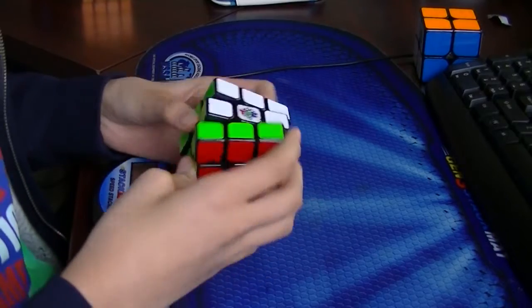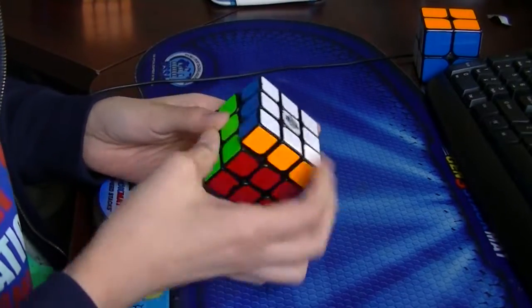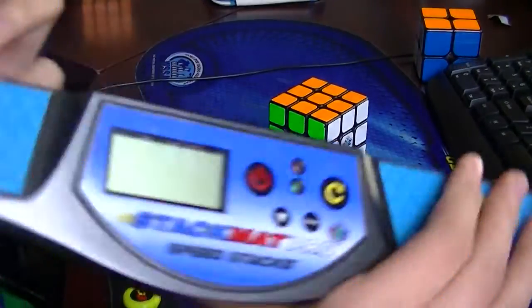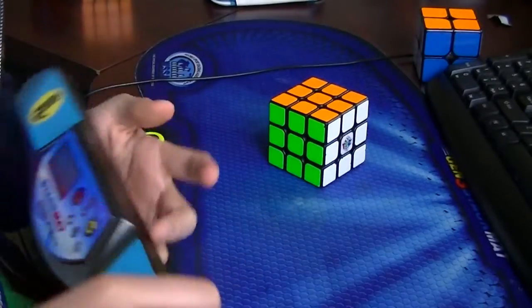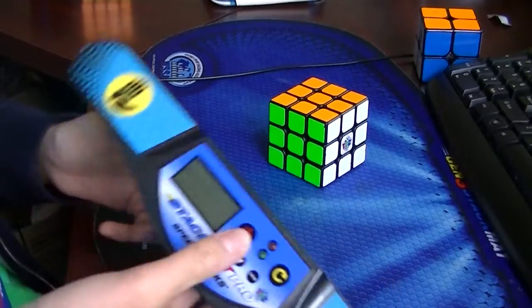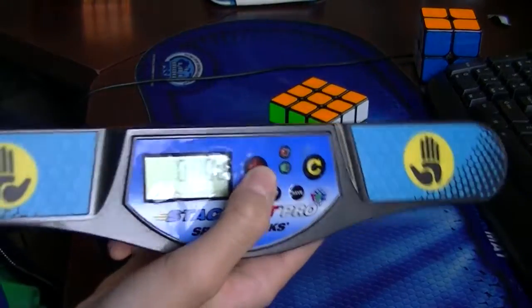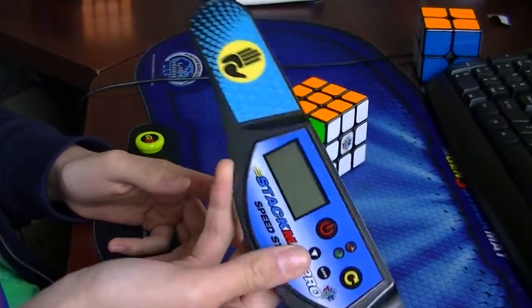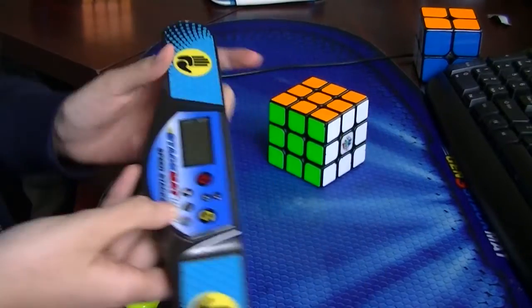So I will be issuing a challenge today. Us as cubers, we have these stack mat timers. It doesn't matter what generation, they all at least go up to the hundredths place. Of course, these pro timers go up to the thousandths place. But if you have a Gen 2, this works as well.